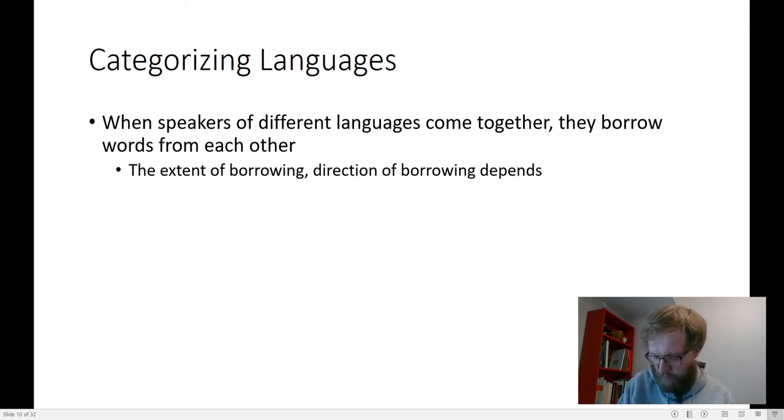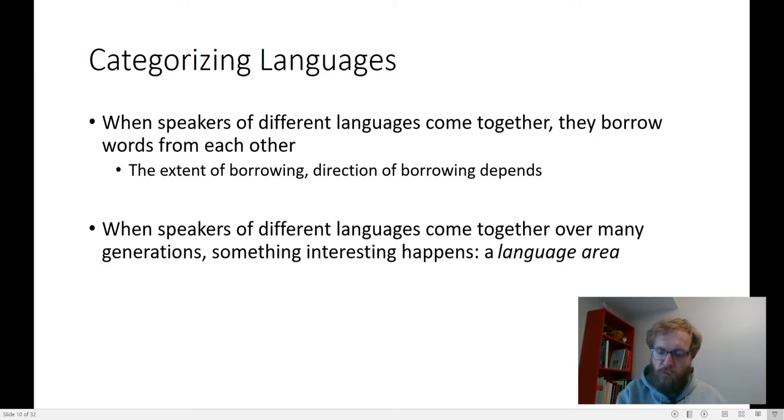Another type of language categorization is purely geographical, purely areal, because it turns out that when speakers of different languages hang out together for long enough, they not just borrow each other's practices and each other's ways of doing things, each other's foods, they also borrow words. And sometimes it'll be even-steven, and you'll be borrowing the same direction, a couple different languages each borrowing from each other in an egalitarian way, and sometimes the borrowing is really asymmetric. But when this sort of thing happens over generations and generations, and you get multilingual speakers over many generations speaking different languages together, then you get what we call a language area.